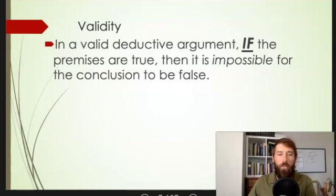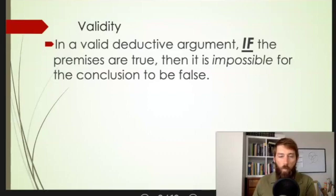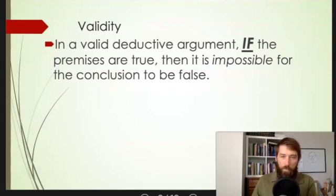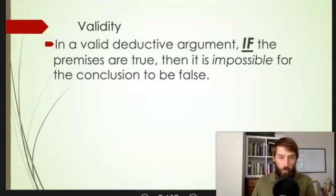Validity concerns the inferential claim of a deductive argument. So in order for an argument to be valid it first must be deductive — if you don't remember what that is, go back and review the last video. To be a valid deductive argument: if the premises are true, then it's impossible for the conclusion to be false. I have highlighted, bolded, underlined, and italicized the 'if' because this is hypothetical. It doesn't matter whether the premises are actually true. All that matters is: if they were true, then it would be impossible for the conclusion to be false.